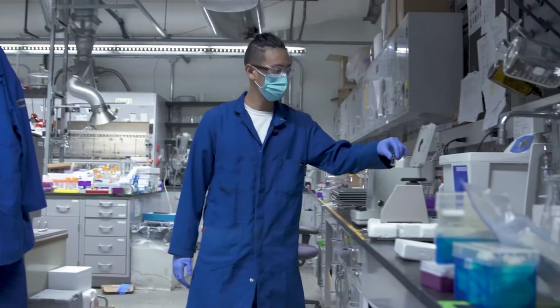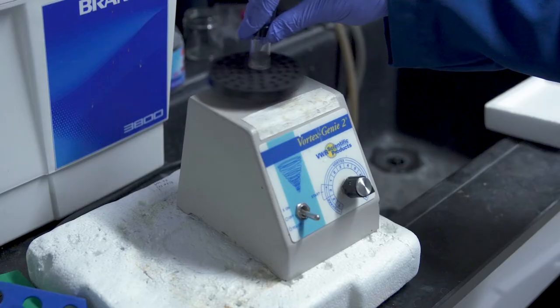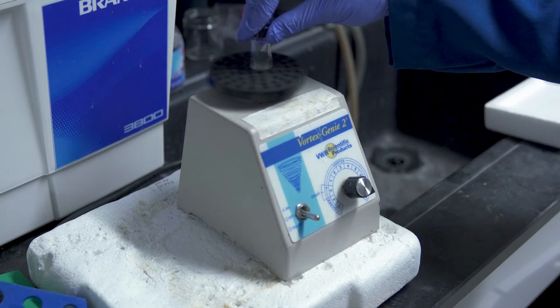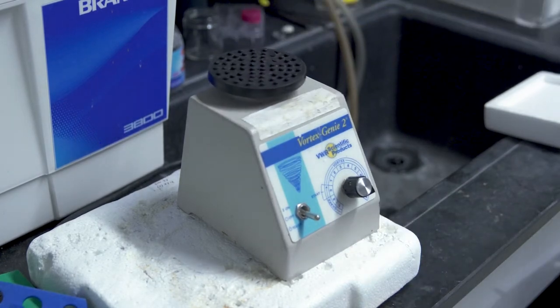We use a vortexer to mix them at high speeds to ensure that the enzymes, the Pac-Mans, find their armors and are able to put them on.